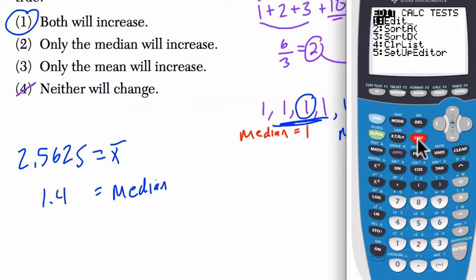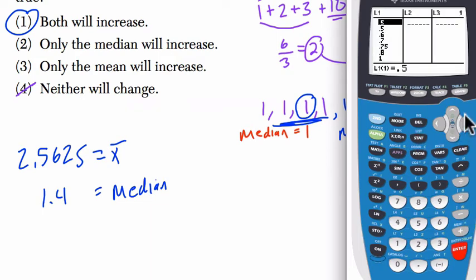So now in the calculator, all I have to do is go back to stat, go back to edit, and I'm going to say list 2 is equal to list 1, second 1. Boom. I get all my values again. Now I'm going to go to the very bottom of list 2, and I'm going to add the number 10 to it to see what happens to the mean and median. Scroll all the way down to the very bottom. Almost there. There it is. Enter in 10.